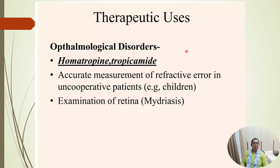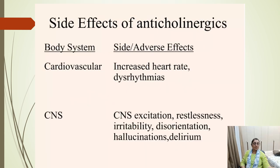For ophthalmic disorders, homatropine and tropicamide are used for accurate measurement of refractive error in uncooperative patients such as children, and for examination of the retina — mydriasis.